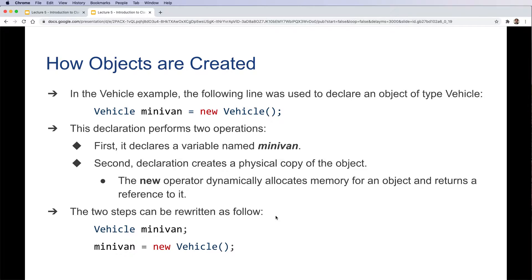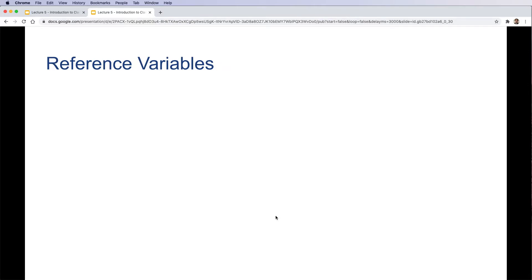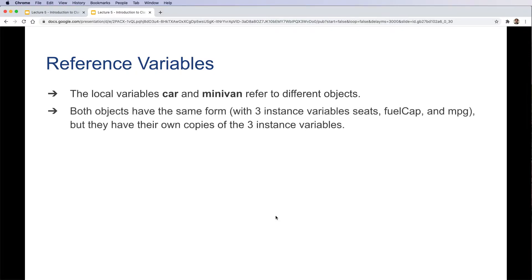How reference variables work: the local variables car and minivan refer to different objects. Both objects have the same form of type Vehicle with three instance variables: seats, fuelCap, and mpg, but they have their own copies of the three instance variables.